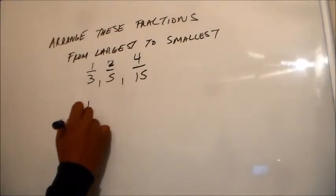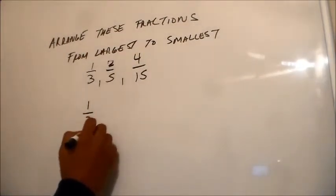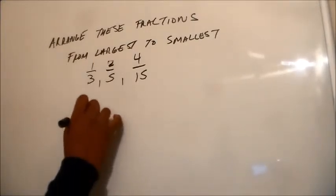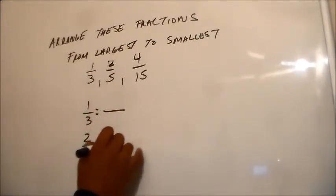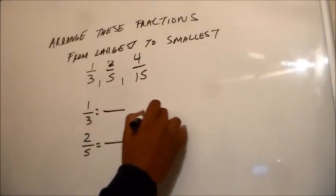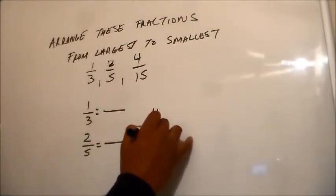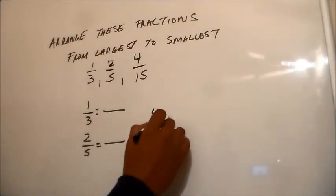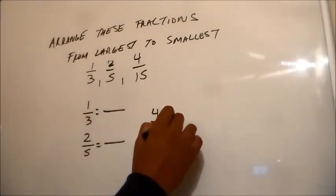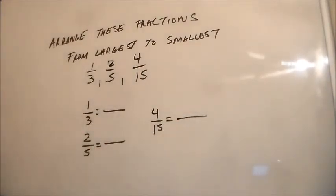So from largest to smallest, I'll change all of these into decimal form. One over three is about 0.33, two over five is about forty percent or 0.40, and four over fifteen is roughly about a quarter — about 0.25. Let's see what we come up with.